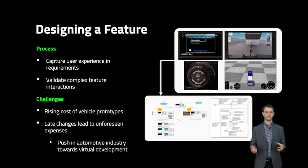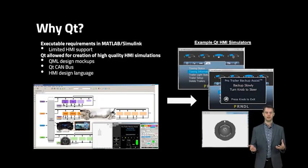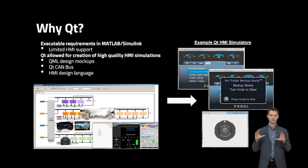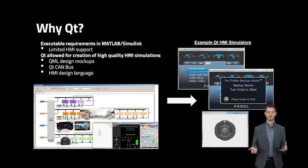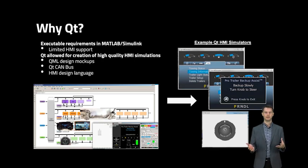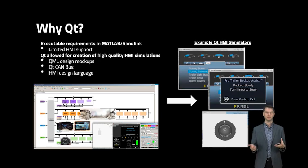There's also a push in the automotive industry towards reducing expensive prototype vehicles and doing more virtual validation, and this has been accelerated by the current global pandemic. At Ford, we've been focusing on model-based design. We take those traditionally static text and flowcharts and implement them as computer models in a program like MATLAB and Simulink. You can create executable models of your requirements so you can test and validate your feature, but really the HMI support in MATLAB and Simulink was limited.